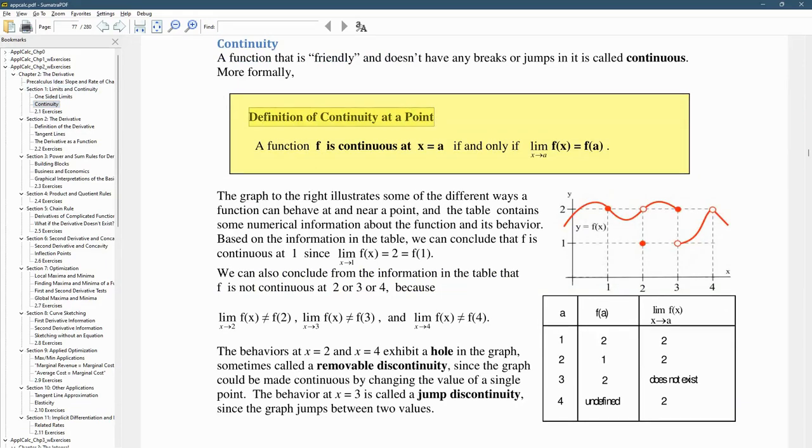Definition of a function to be continuous at a point. So it is continuous at x equals a if and only if, which means it's the definition, or it's continuous exactly when the limit as x approaching a is equal to the y value at a.